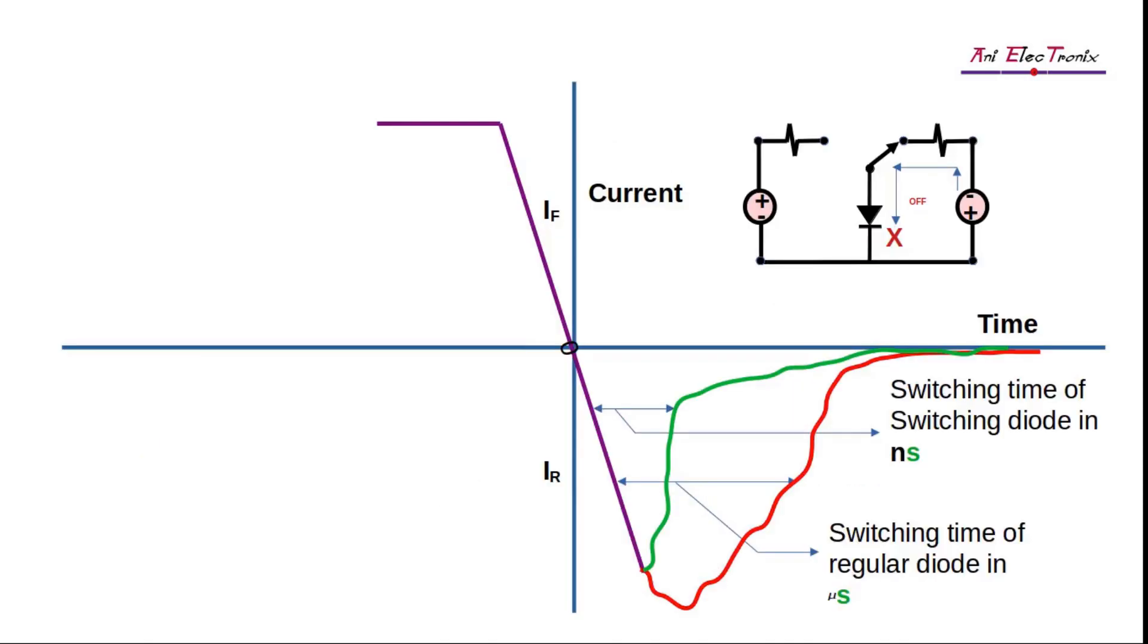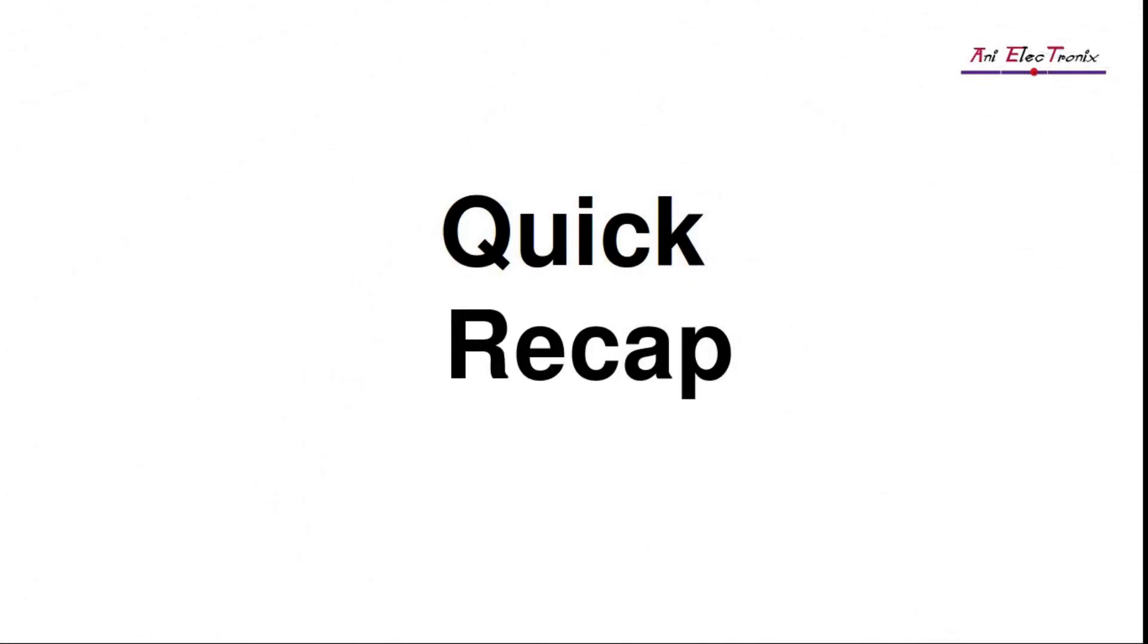In addition to a switching diode, a normal PN junction diode is also shown in the graph. Here's a quick recap of the important points.